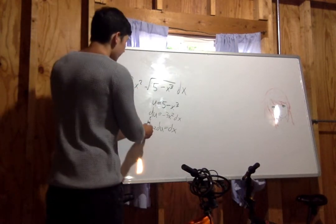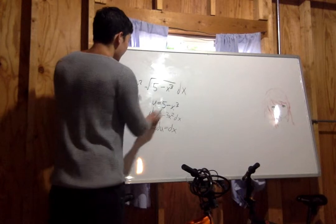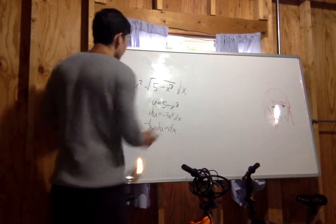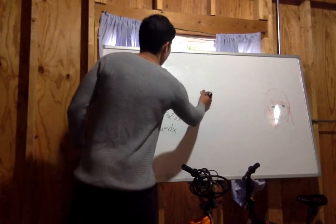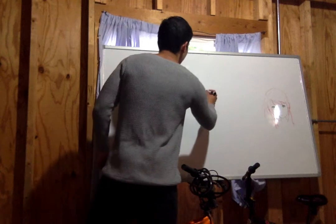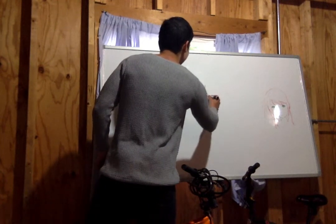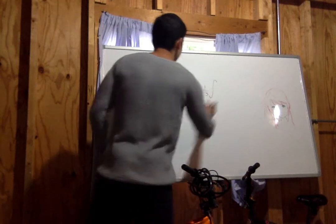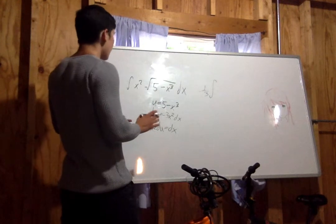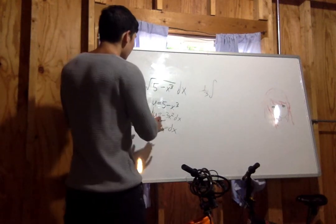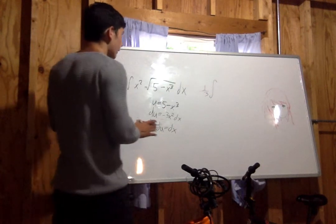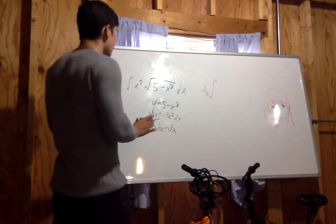What you're left with is negative 1 third and the du. You have negative 1 third, which you can leave outside the integral. Anytime you have a constant without a variable, you can leave it outside.